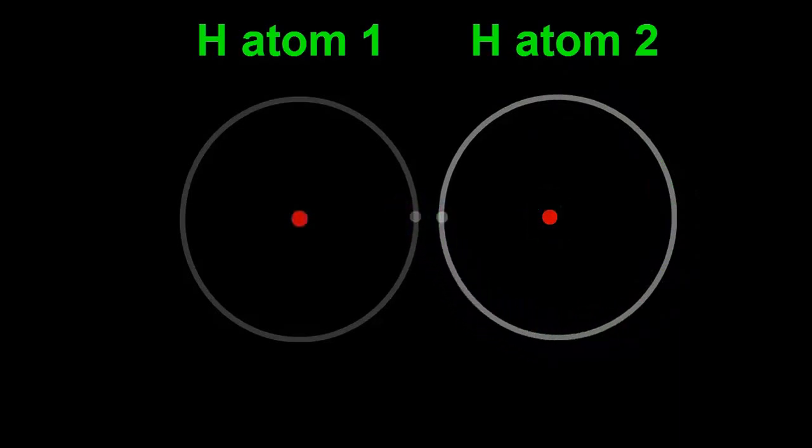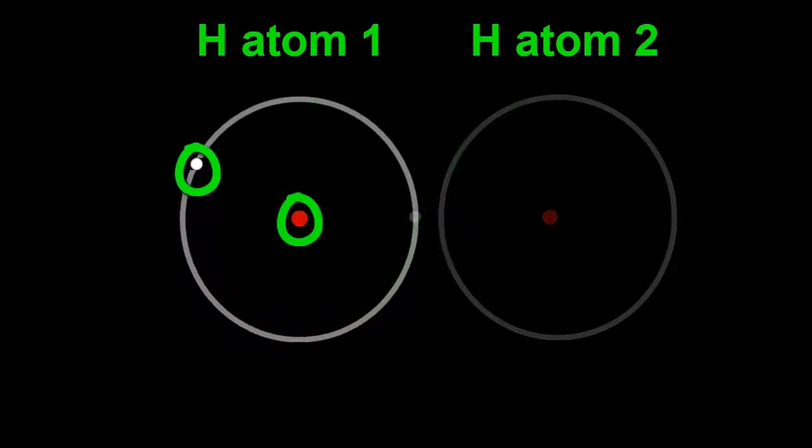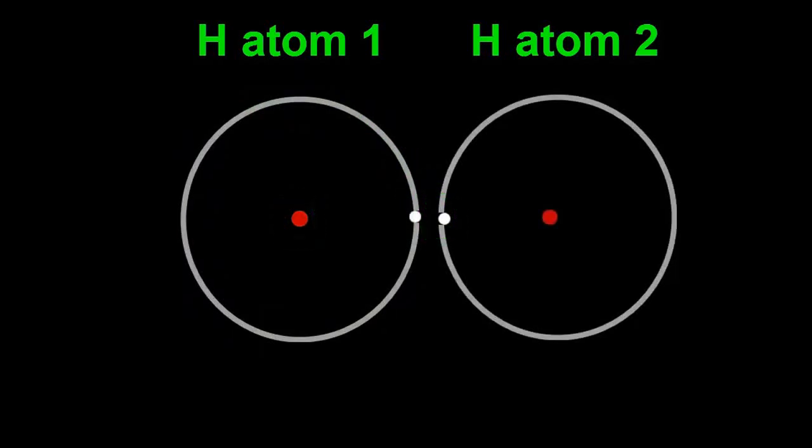The same deal happens between the electron from atom 2 and the proton from atom 1. This means that both electrons wrap themselves around both atoms and they act as a kind of glue to hold them together. The two atoms become one molecule.